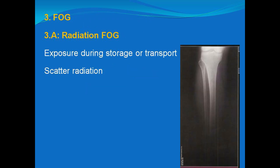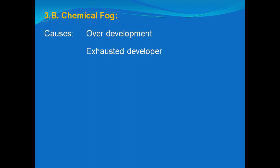Next is the problem of fog. Radiation fog is caused by exposure of the film to radiation — it can occur during transport of the film or due to scattered radiation reaching over the film, resulting in a non-clear radiograph.